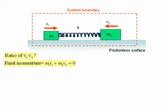Therefore, the final momentum is equal to m1 v1 plus m2 v2, which is equal to zero.